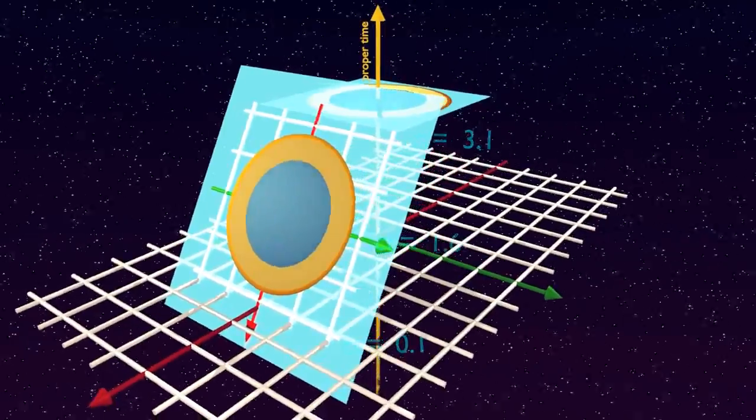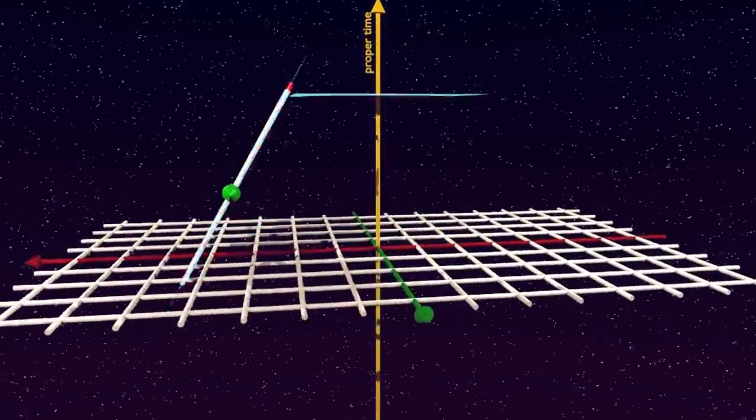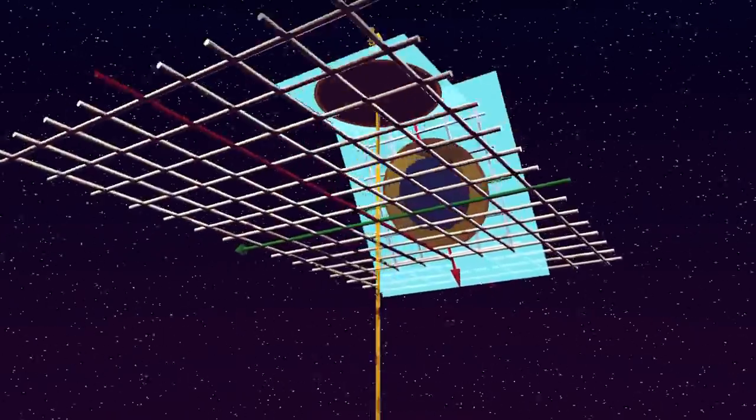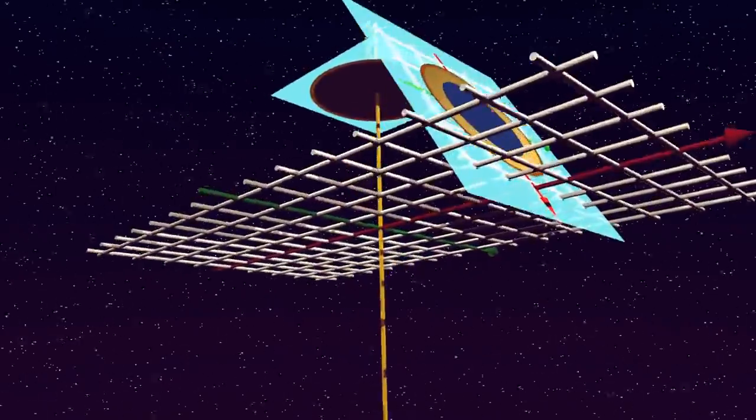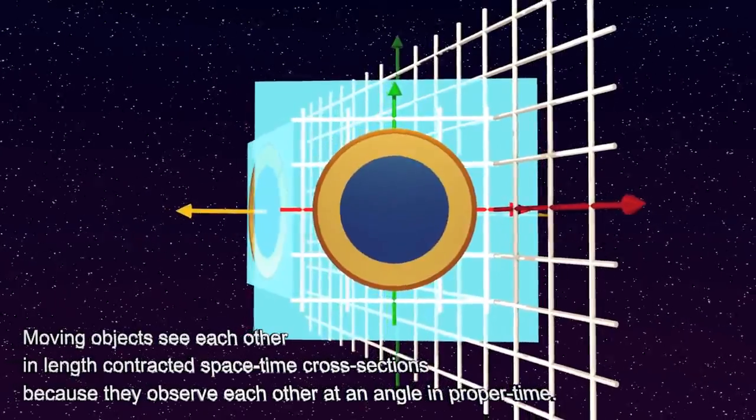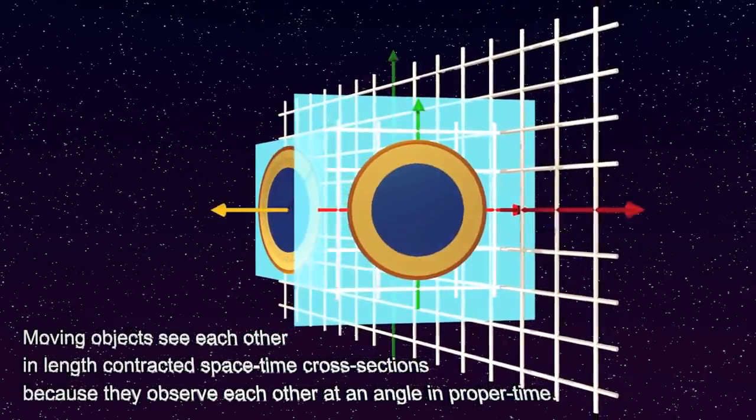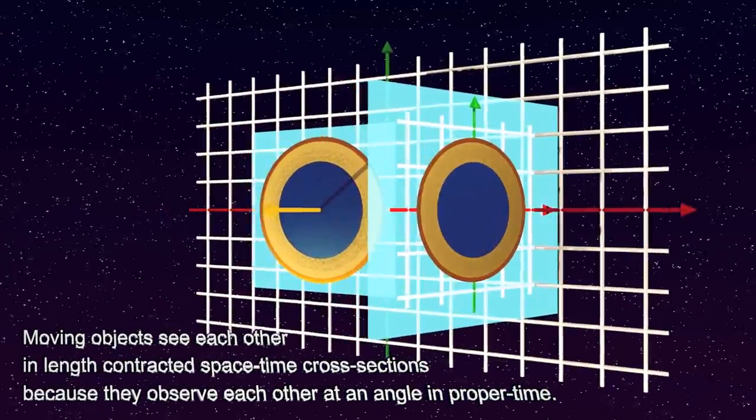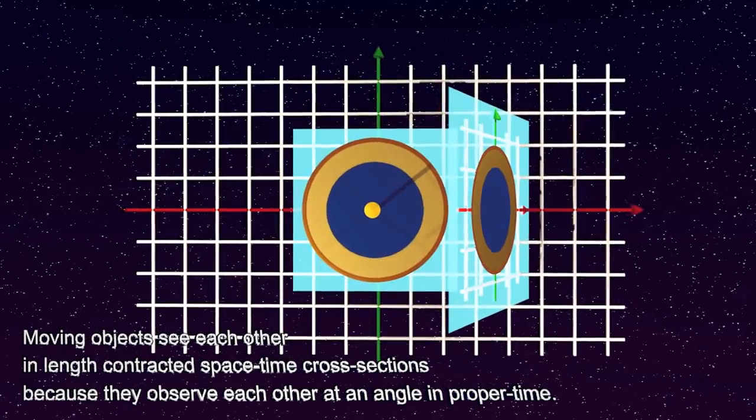And now we see two identical two-dimensional labs observing each other at an angle in proper time. Each sees the other through an orthographic projection in space-time, and each observes the other length contracted along the direction of motion.